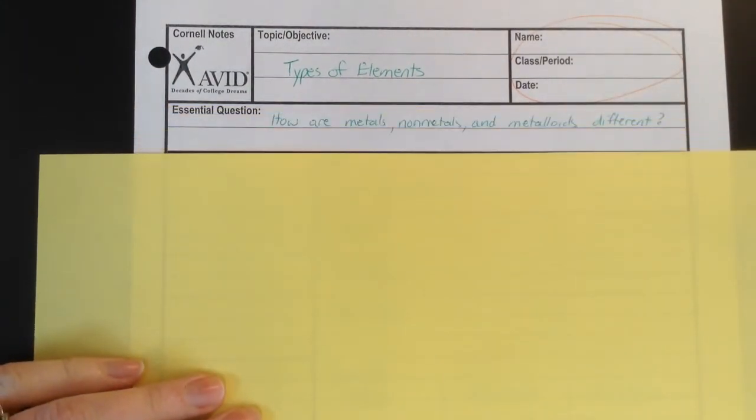So we've got one question, how are metals, nonmetals, and metalloids different? So we're going to write down a generic definition and then talk about the properties and then find them on the periodic table.